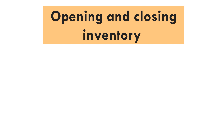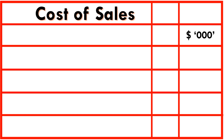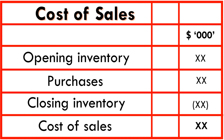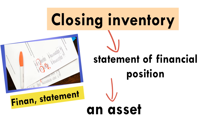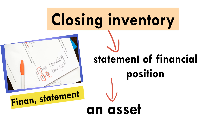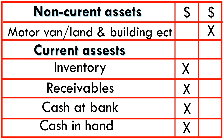First, opening inventory and closing inventory appear in the statement of profit or loss as part of the calculation of cost of sales. This is done as follows: you take the opening inventory, add purchases during the year, and then deduct closing inventory. Closing inventory also appears in the statement of financial position as an asset. Any inaccuracy in the valuation of inventory will lead to erroneous values of profits and assets. As you can see in my sample statement of financial position, inventory appears as a current asset, along with receivables, cash at bank, and cash in hand.